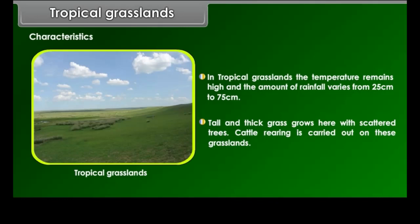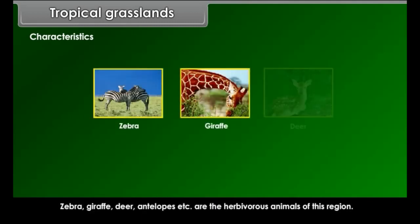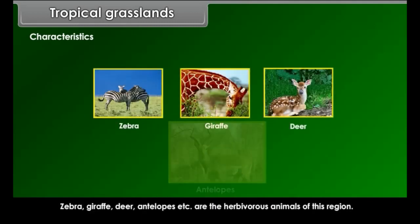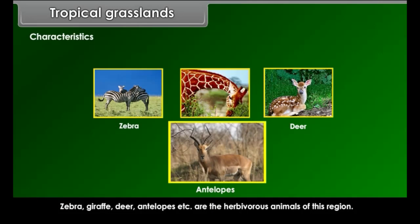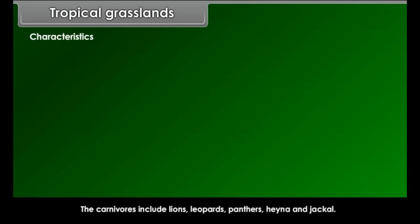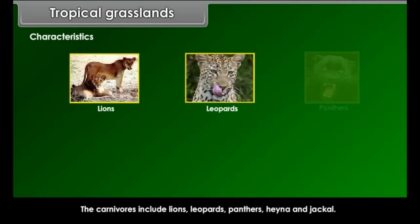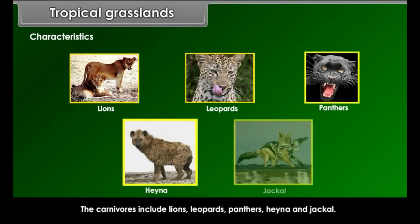Cattle rearing is carried out on these grasslands. The animals of these grasslands are both herbivores and carnivores. Zebra, giraffe, deer and antelopes are the herbivorous animals of this region. The carnivores include lions, leopards, panthers, hyena and jackal.